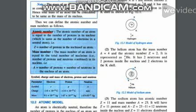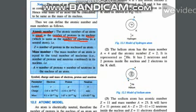The atomic number of an atom is equal to the number of protons in the nucleus — which is the same as the number of electrons in the neutral atom. Atomic number is denoted as Z, and mass number is denoted as A.